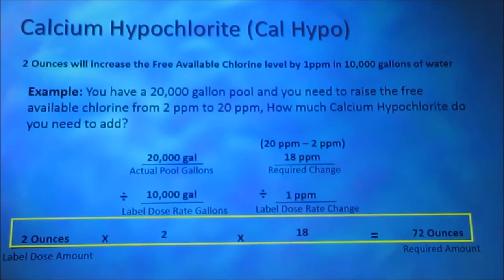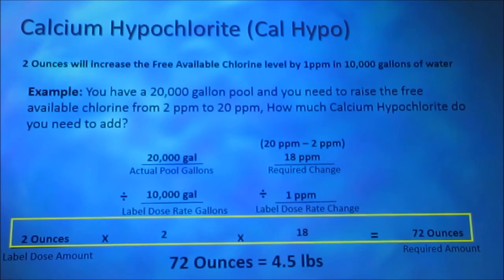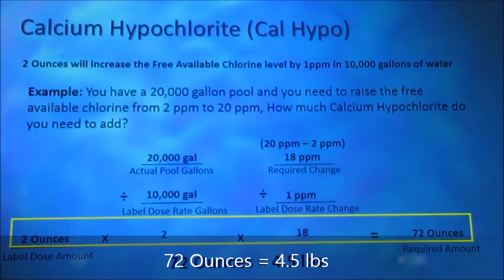Calcium hypochlorite is a dry chemical. We want to convert this to pounds. There are 16 ounces in a pound. 72 divided by 16 equals 4.5 pounds. The answer is 4.5 pounds.